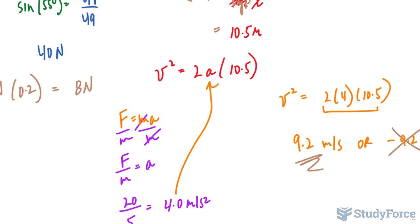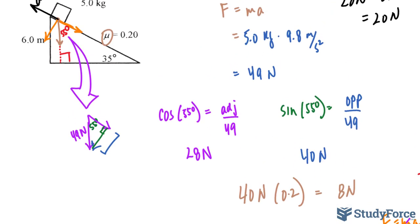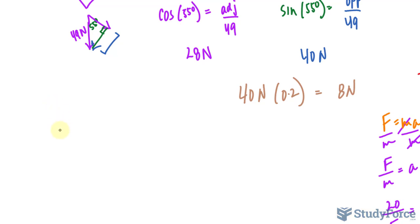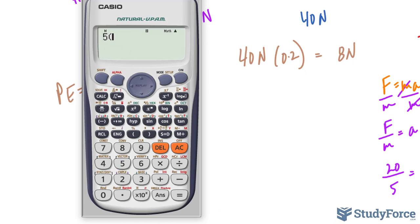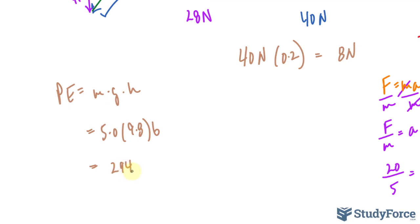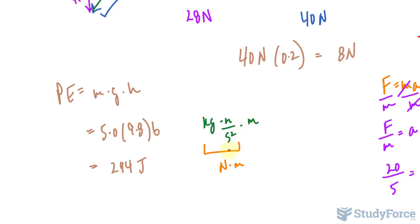Now let me show you another way to find the answer, this time using potential energy. I'll begin by calculating the potential energy of the mass at the top of the incline. Potential energy is calculated using mass times gravitational acceleration times height: 5 × 9.8 × 6 = 294 joules. This works because kilograms times meters per second squared times meters gives newtons times meters, which equals joules.